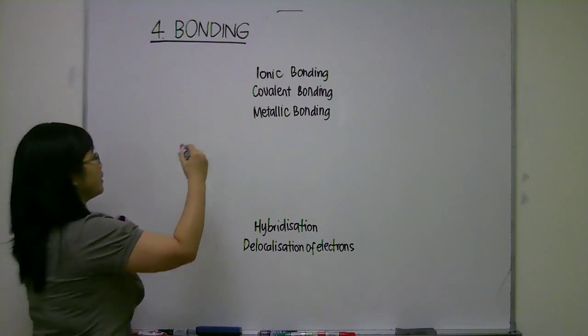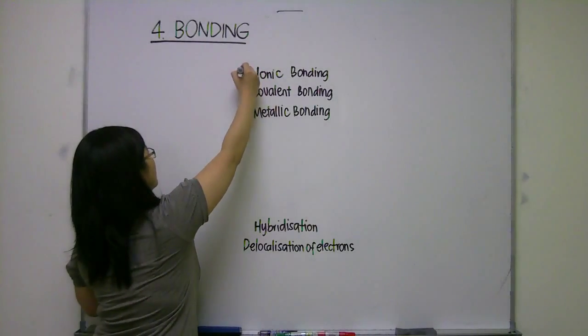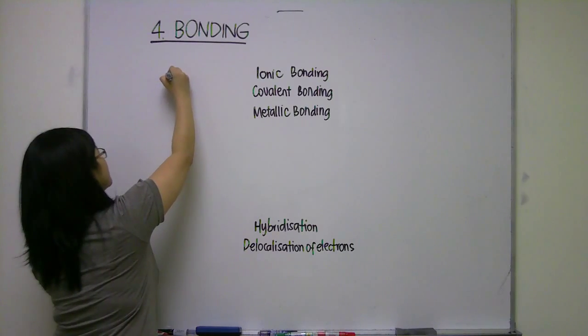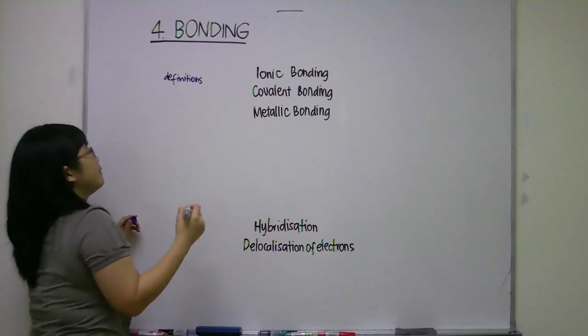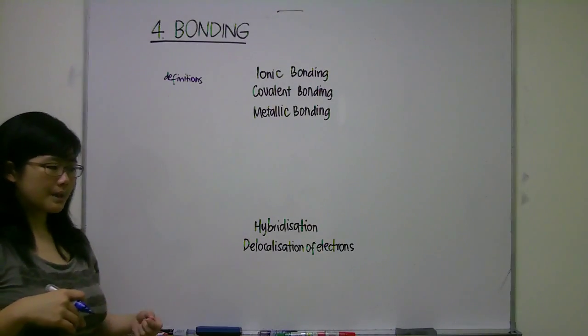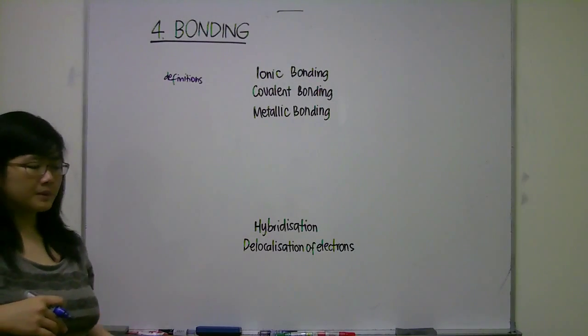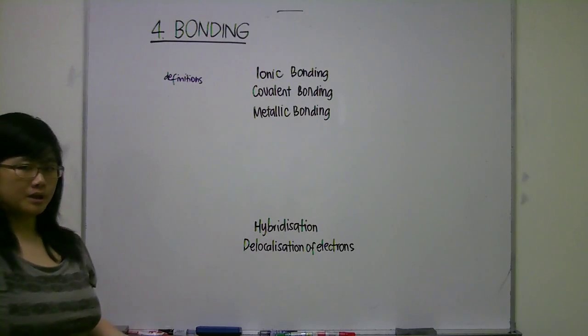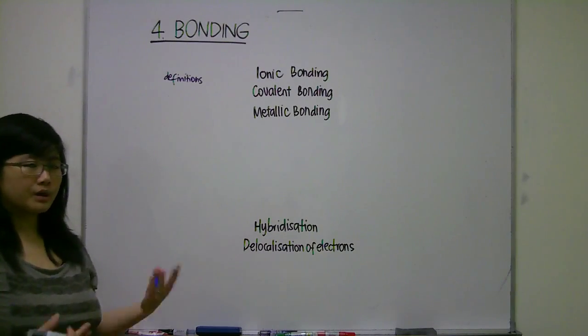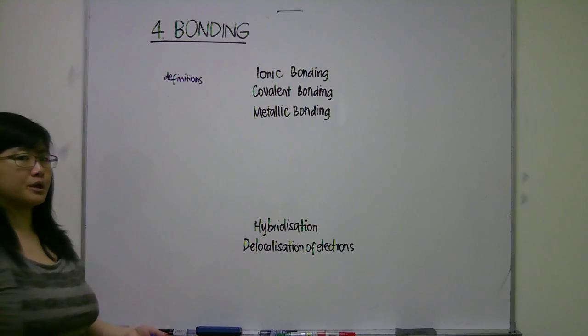For these three, we're going to be talking about the definition and the type of elements that will give rise to this type of bonding. For example, metal and non-metal will give you ionic bonding, or within non-metal and non-metal you get covalent bonding, and so on.